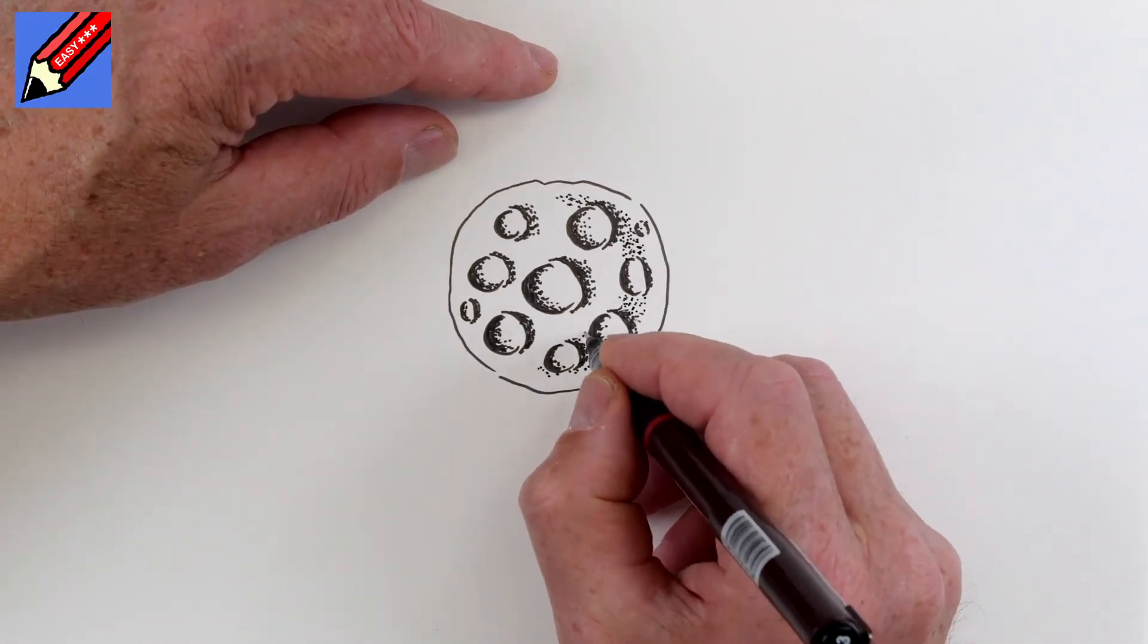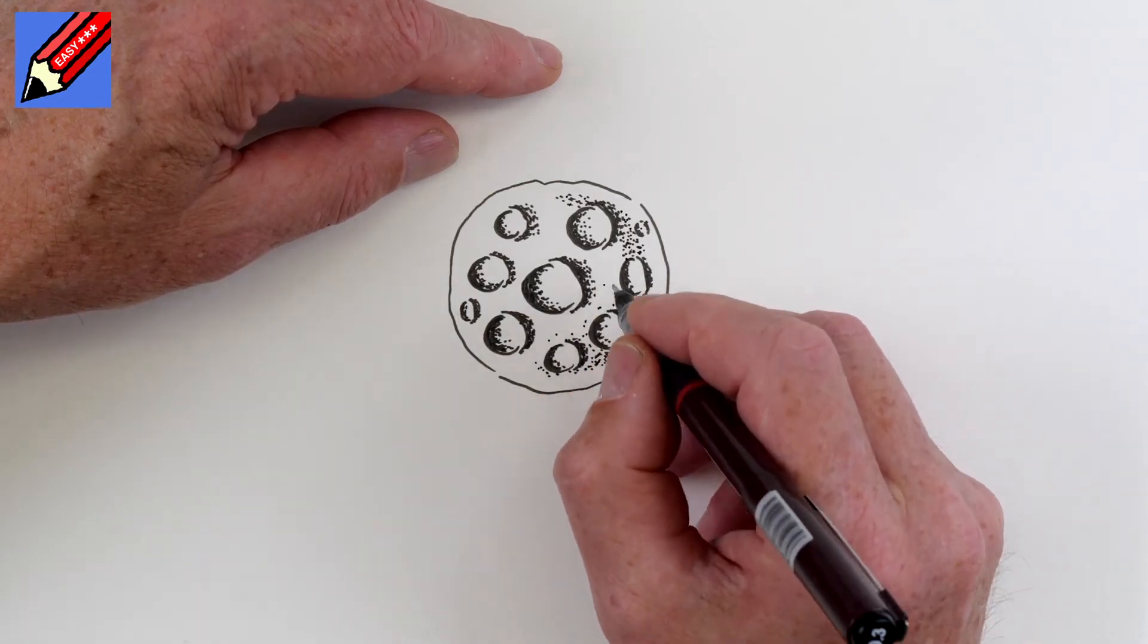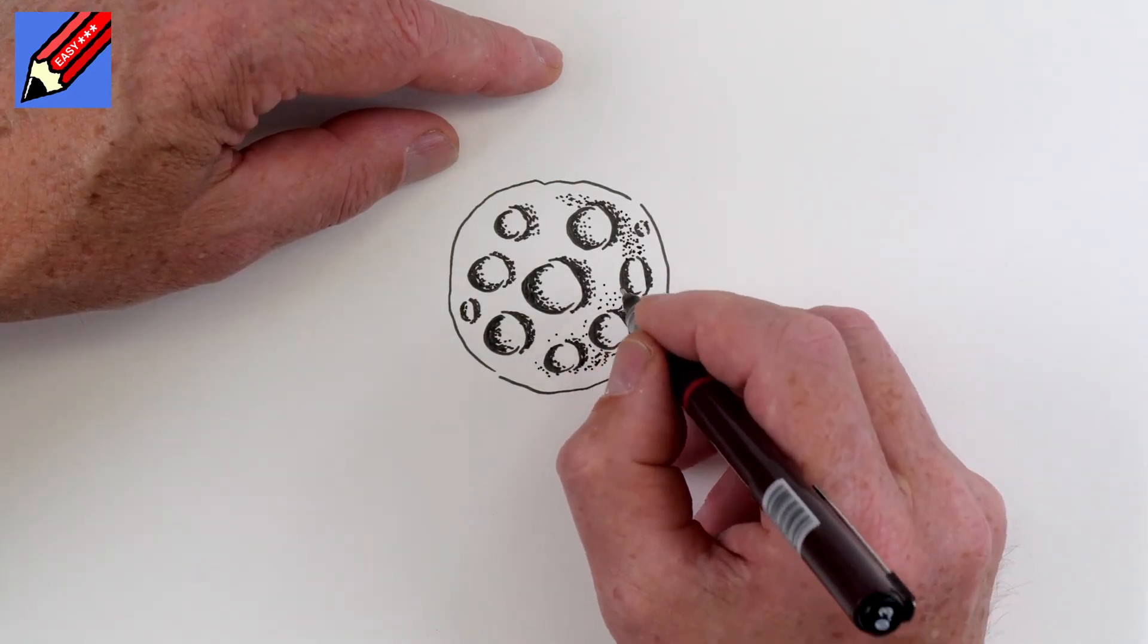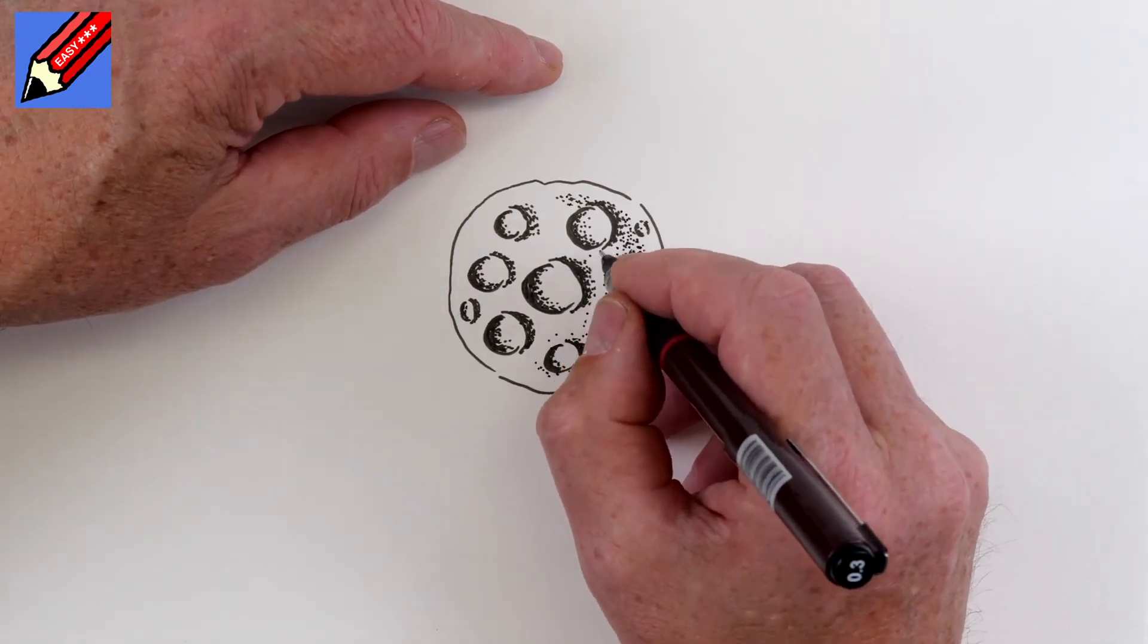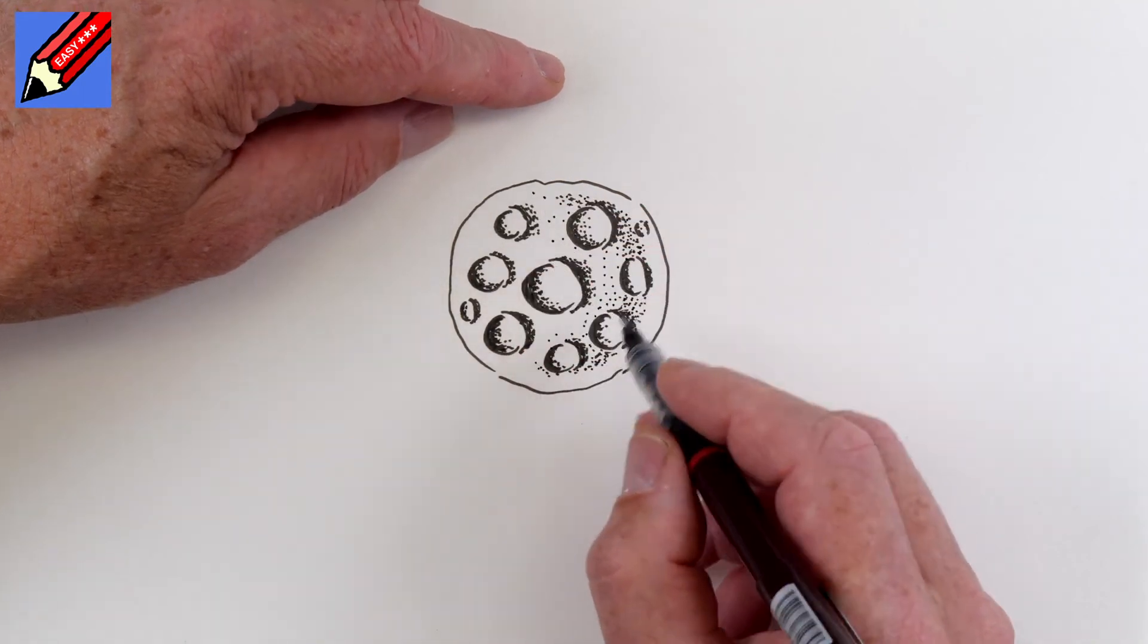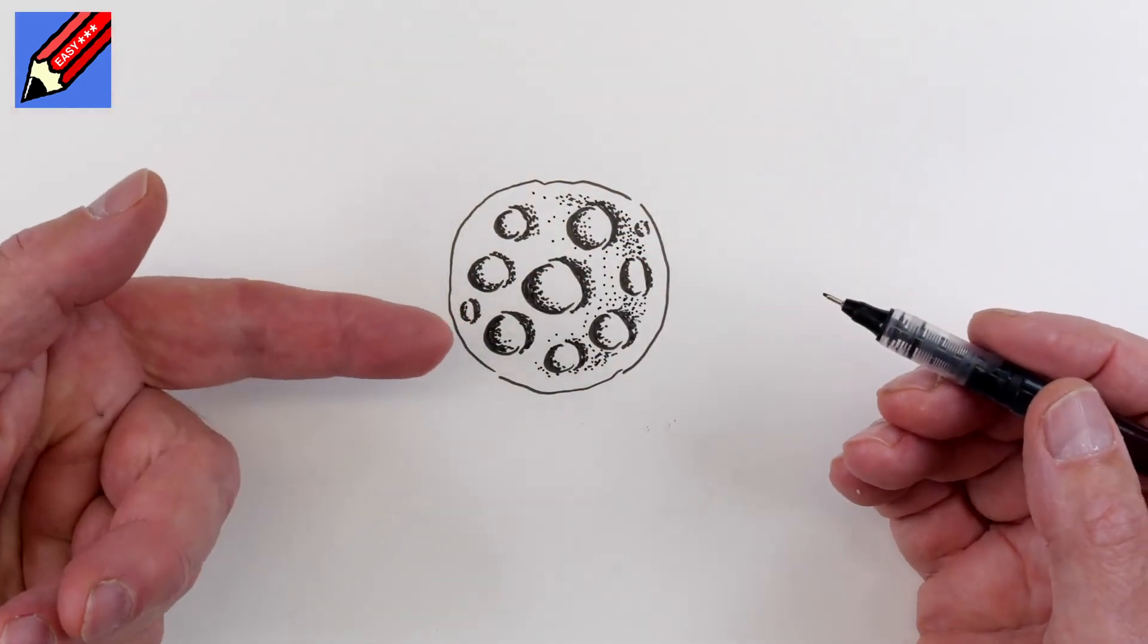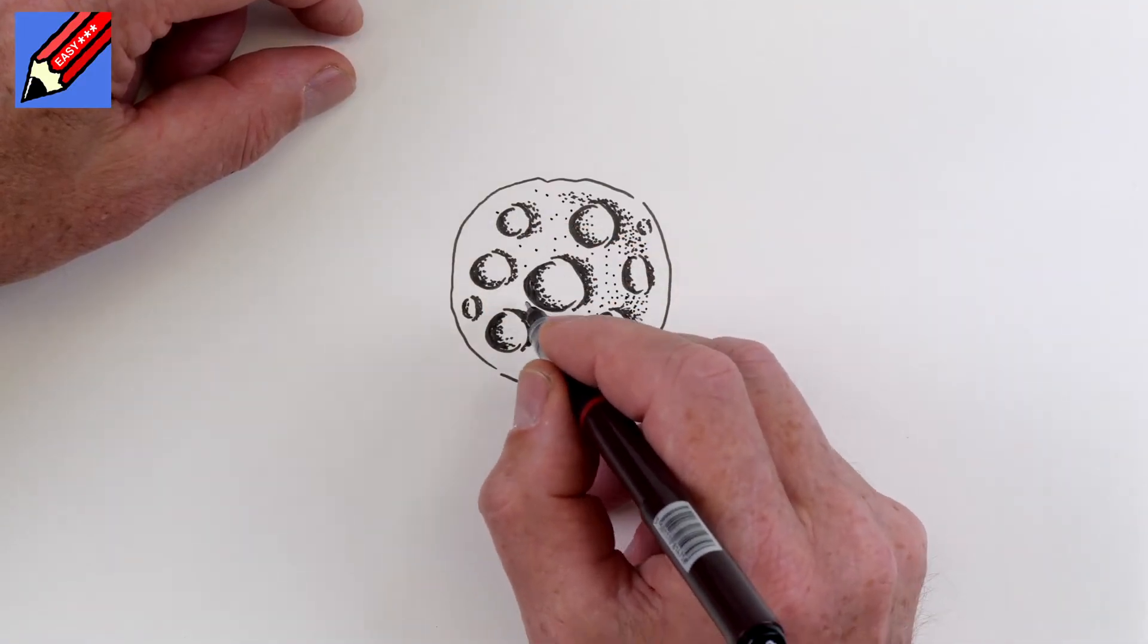Having got that in there, then we want to sort of make the rest a little bit not quite so dotty. So we need those dots to be further apart like that. Sort of around there. And then as we get further and further around to where the sun is shining on this side, then we have hardly any dots at all.